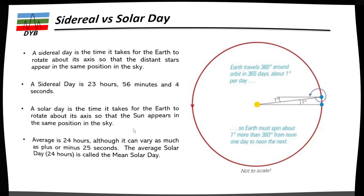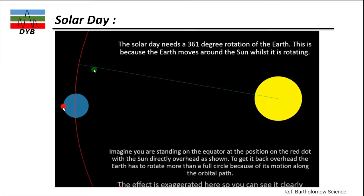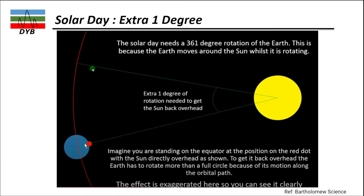Let's look at a diagram to explain this further. The Sun is shown in yellow, and you are standing at the red dot on Earth. If you are calculating a solar day and you start at this position, after 12 hours you will be on the opposite side, and after exactly 24 hours you will return to the same position. The Earth has also moved in its orbit, so the Sun appears overhead again, which adds one extra degree of rotation.